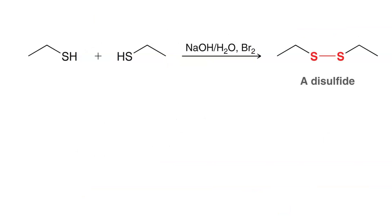Reacting a thiol with sodium hydroxide followed by bromine molecule will give you a disulfide. That's the sulfur analog of peroxide.